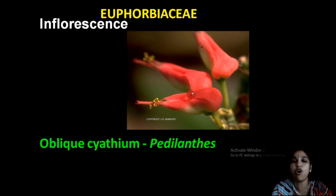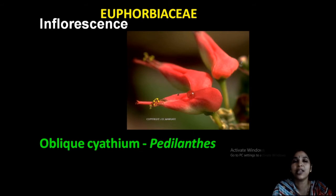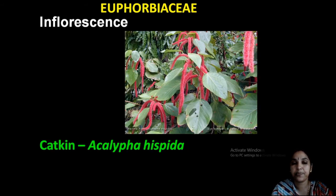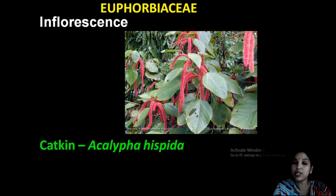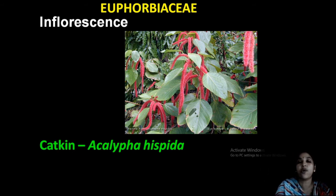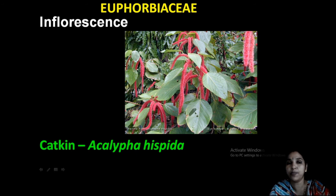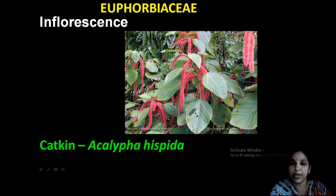Pedilanthus is a plant very common to you — tattapu or velichedi. This is the oblique cyathium. Another inflorescence type — catkin inflorescence — is also very common. It is a drooping, pendulous inflorescence, seen in Acalypha hispida — that is poochawali.